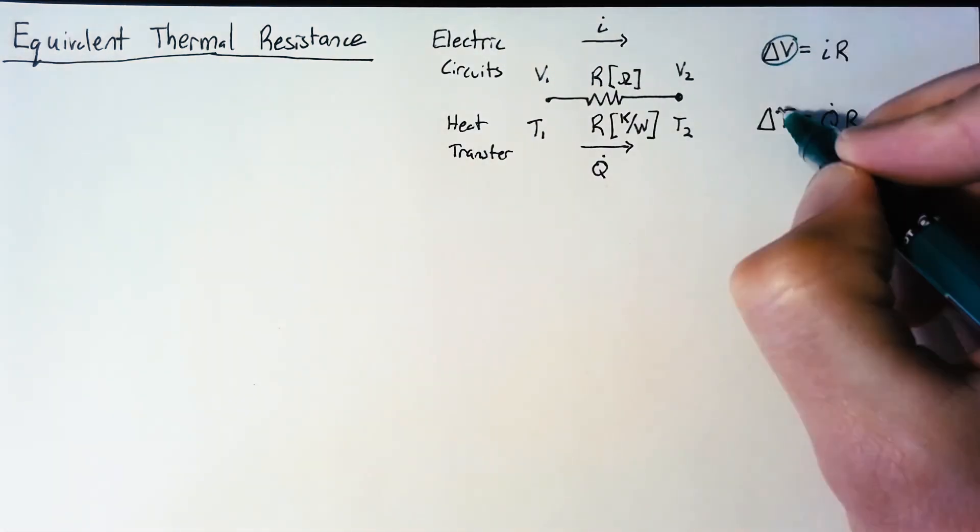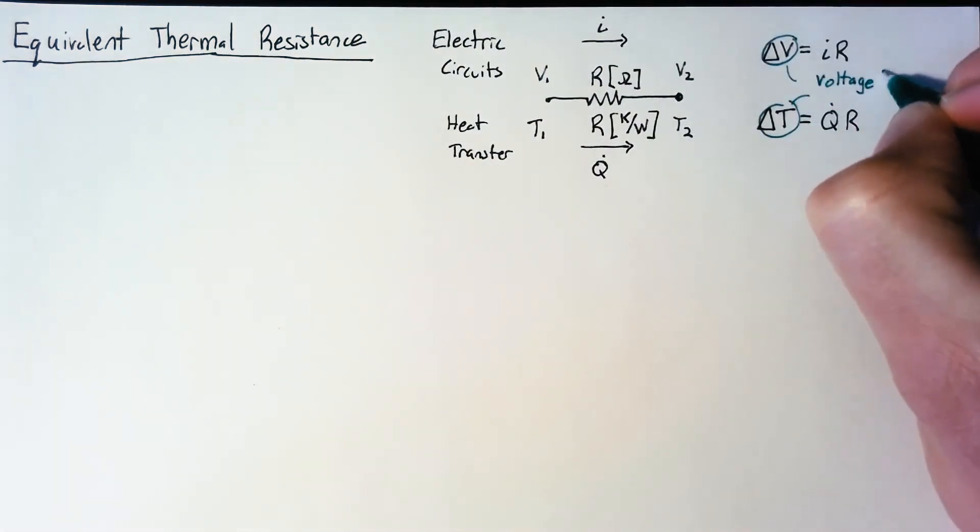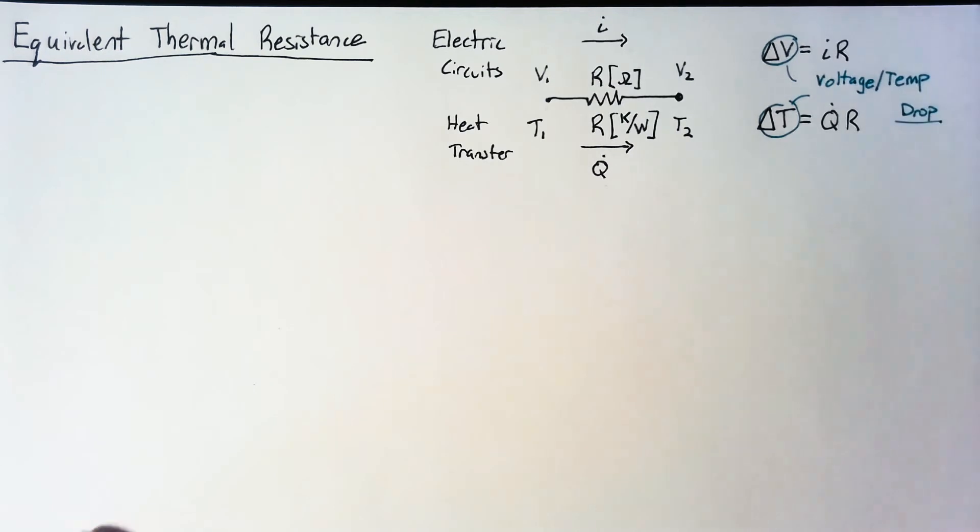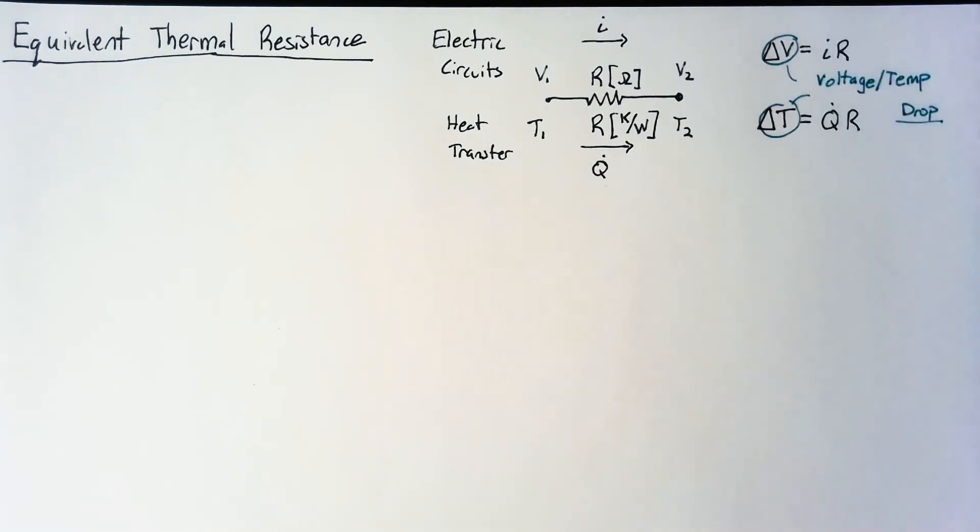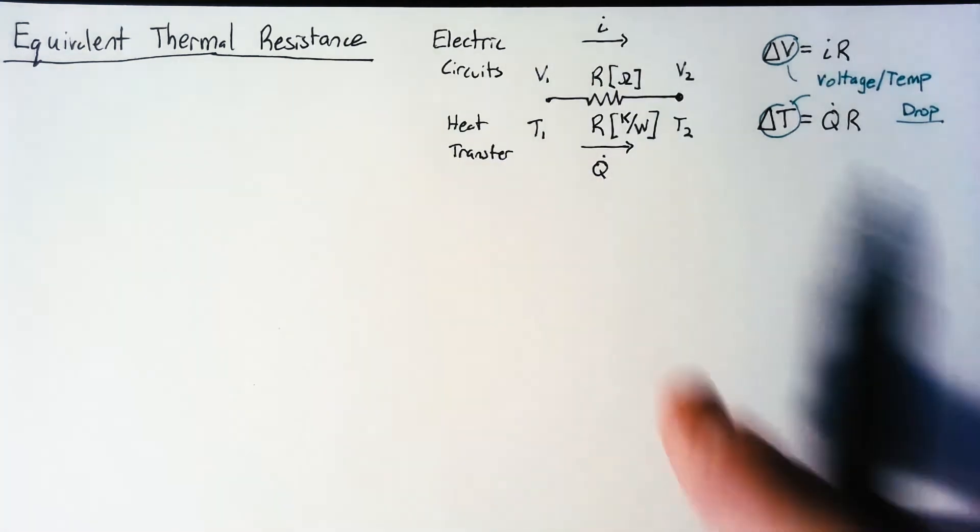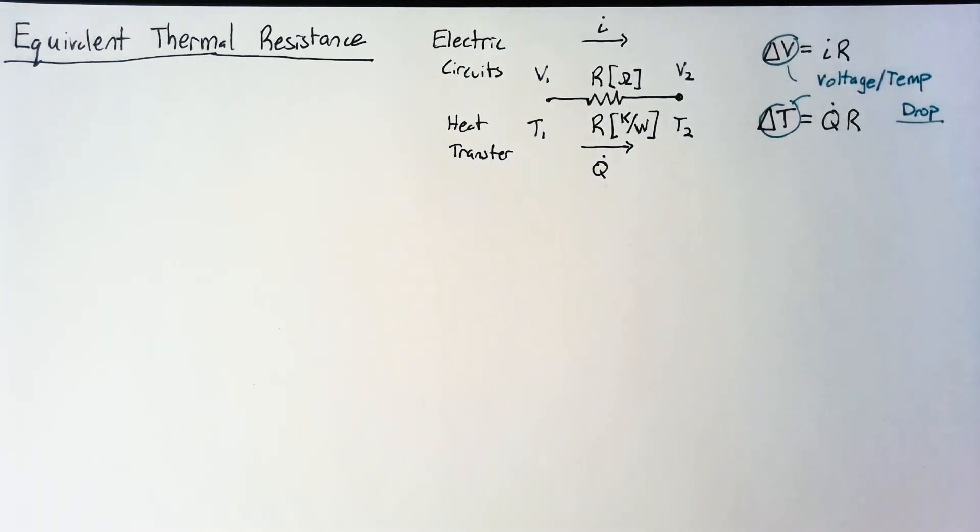And just a reminder that these deltas are voltage and temperature drop in the direction of either our currents or our heat flow. This is the picture that we're trying to draw. And we're going to look at conduction, convection, and radiation, and try to form those equations into something that looks like our resistance equation over here.